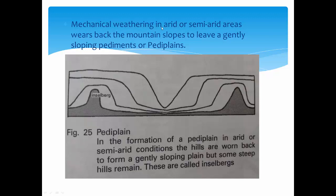In arid or semi-arid areas, mechanical weathering causes mountain slopes to wear back, leaving a gently sloping pediment or pediplain. The mountain slope gradually erodes — initially steep, then reducing over time. The area from the base to the worn slope forms the pediplain. Whatever mountain portion remains after denudation and erosion is called an inselberg. So you now know what a pediplain, peneplain, and inselberg are.